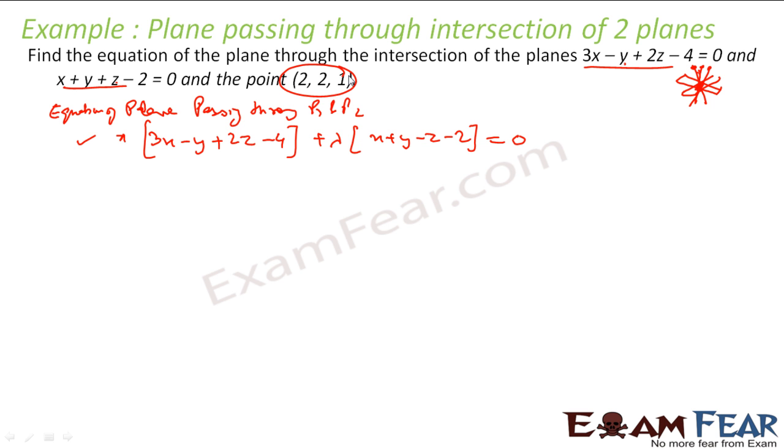Now it passes through (2,2,1), and with that I can uniquely identify the value of lambda. So let me put the value x is 2, y is 2, and z is 1. That is: 3 into 2 minus 2 plus 2 into 1 minus 4 plus lambda into (2 plus 2 plus 1 minus 2) equals 0. So what I get here is 6 minus 2 is 4, 2 into 1 is 2, so 6 minus 4 is 2 plus lambda into 3 equals 0. So I get lambda is minus 2 by 3.